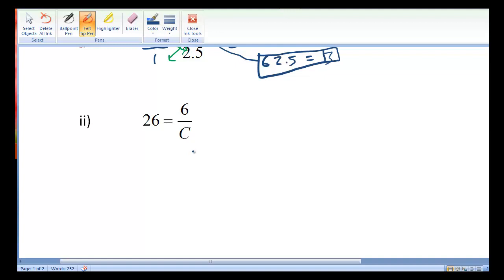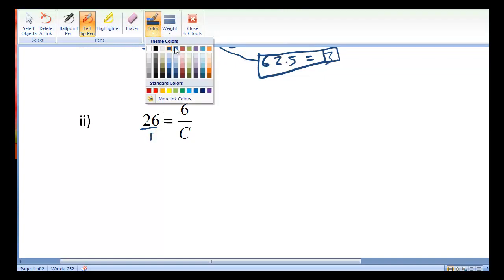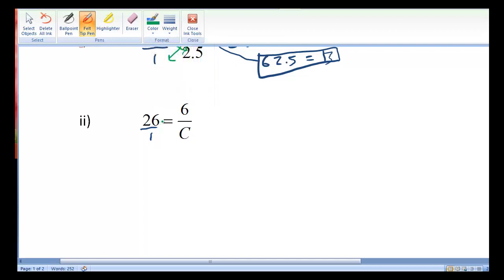Let's take a look at example 2. 26 equals 6 over c. We can do the same approach of putting 26 over 1. Now we can, again, do cross-multiplying. And we will get 26c equals 6. And then we just divide both sides by 26. The 26 cancels on the left. We have c equals 6 over 26, which can be reduced to 3 over 13. It's okay if you leave your answers as fractions, but they should be reduced.